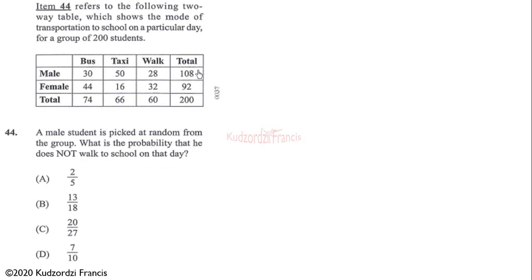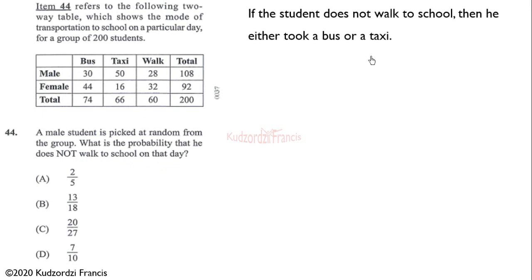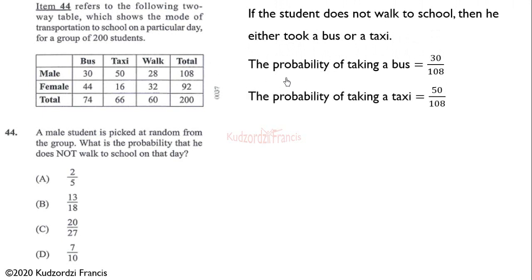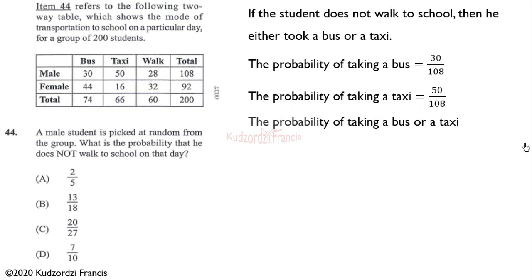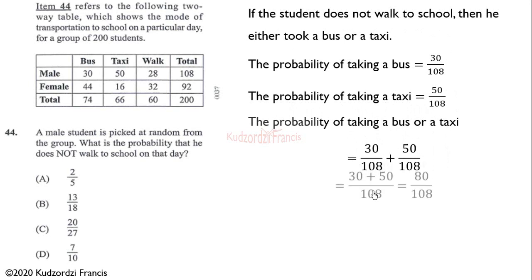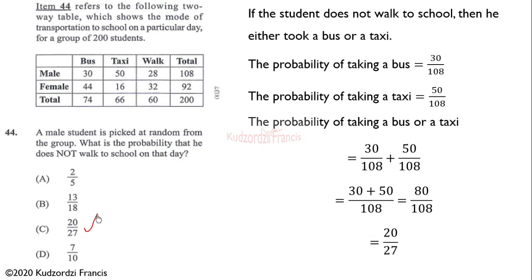The total number of male students is 108. The probability of taking a bus is 30 out of 108, and the probability of taking a taxi is 50 out of 108. Adding these gives 80 over 108, which simplifies to 20 over 37. The correct answer is C.